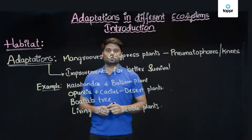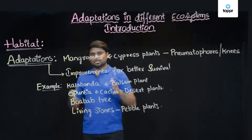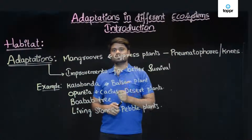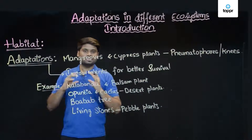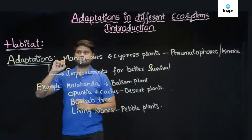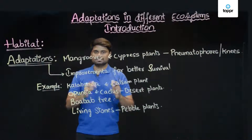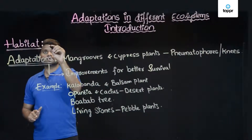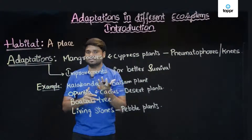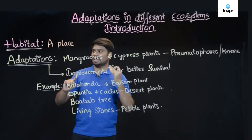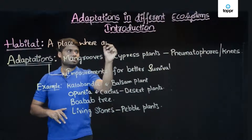In this session we will be discussing an introduction to adaptations in different ecosystems. First, I will discuss about habitat. What is your understanding about the word habitat? Habitat, to put it simply, is a place where an organism lives. A place that is inhabited by an organism — you can see 'inhabitation' or 'inhabited' — so habitat.